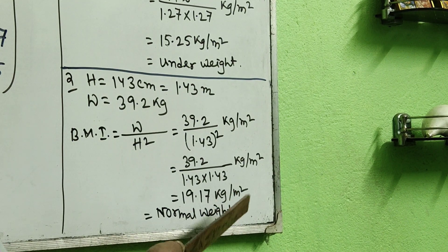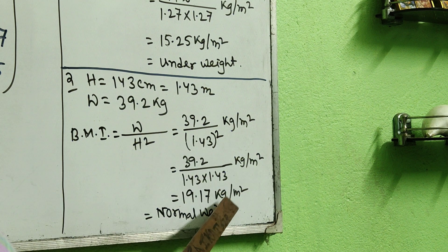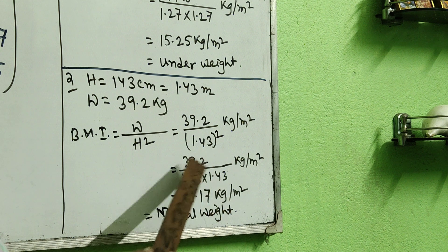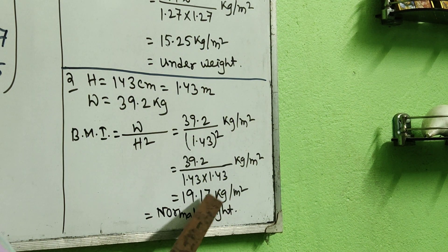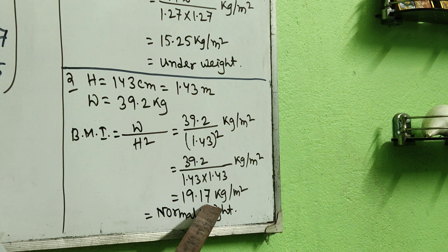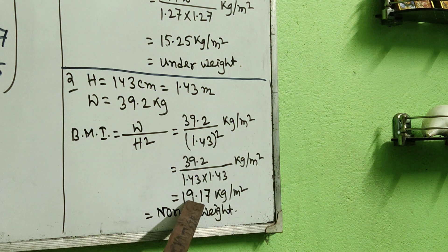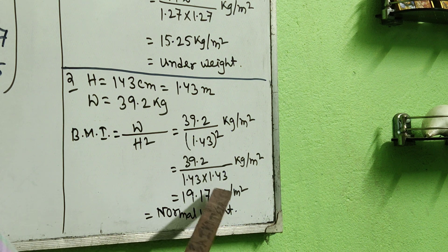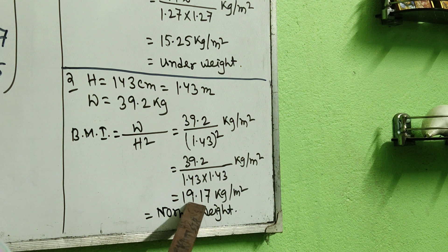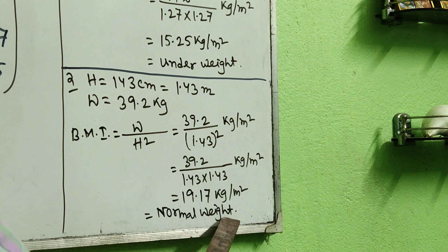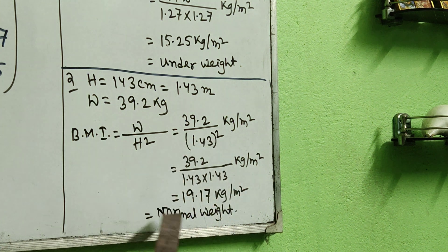Rounding 19.169 to two decimal places — since the third decimal digit 9 is more than 5, we add one to the second decimal — giving 19.17 kg/m². Since 19.17 falls between 18.5 and 25, this person is classified as normal weight. This is how you determine whether a person is underweight, normal weight, overweight, or obese.